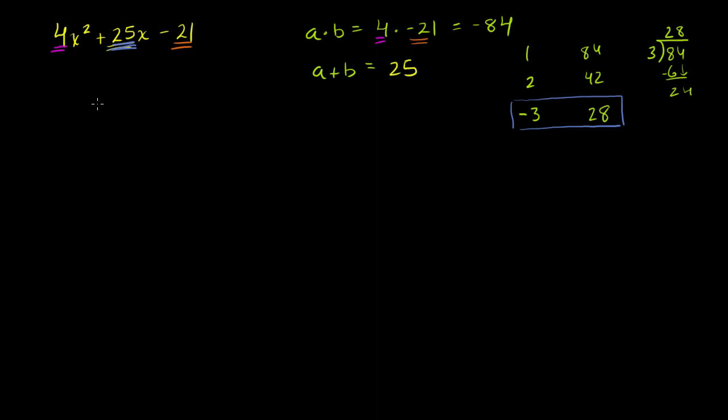What we're going to do now is split up this term right here. We're going to split this up into positive 28x minus 3x. We're just going to split that term. That term is that term right there. And of course, you have your minus 21 there, and you have your 4x squared over here.